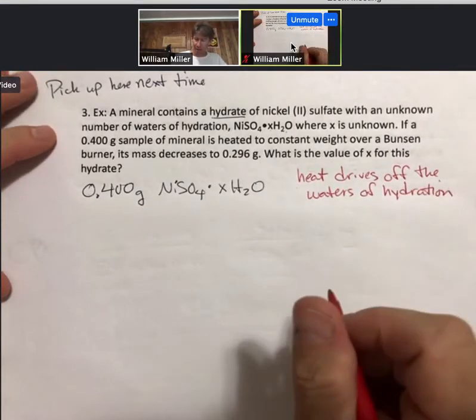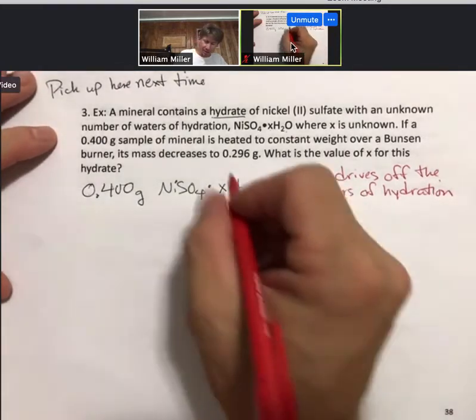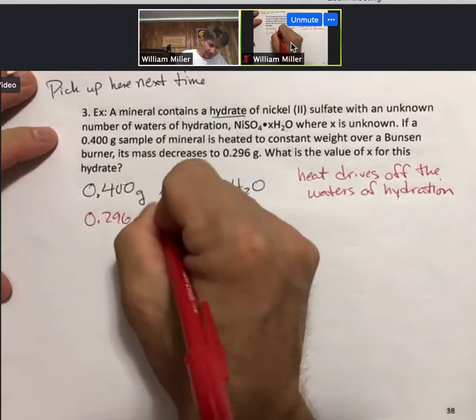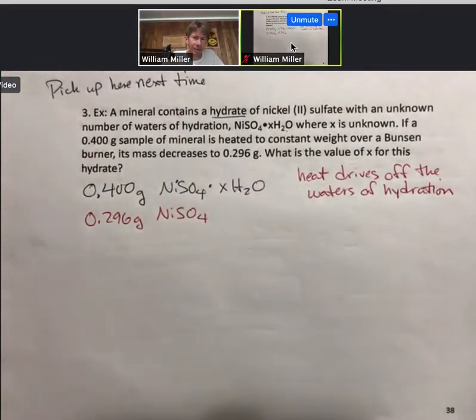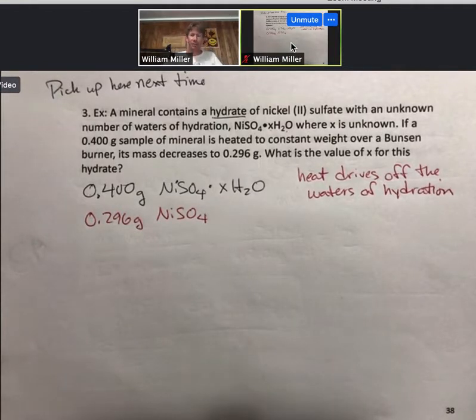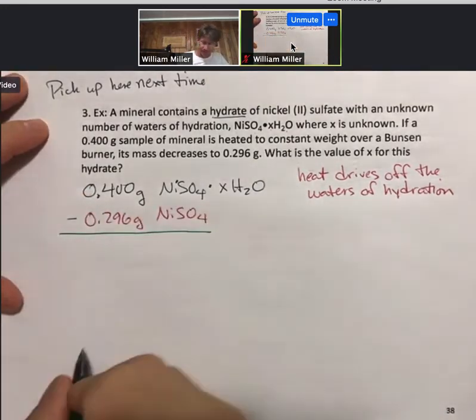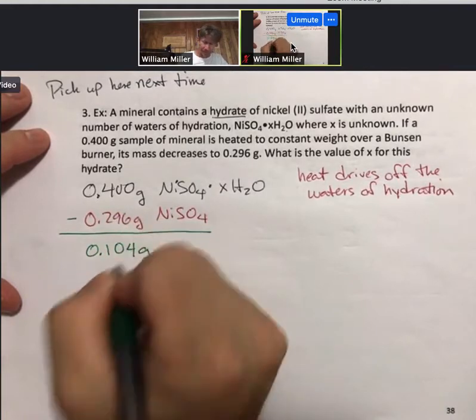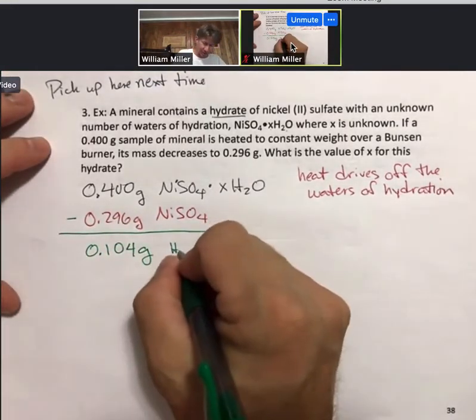When we heat it, its mass decreases to 0.296 grams. Heat evaporates or drives off all of the waters of hydration. So the 0.296 grams are just the nickel(II) sulfate, and then by subtraction we can find the grams of H₂O.